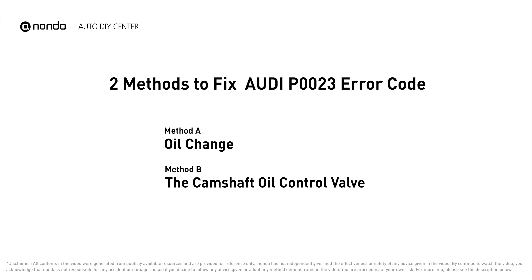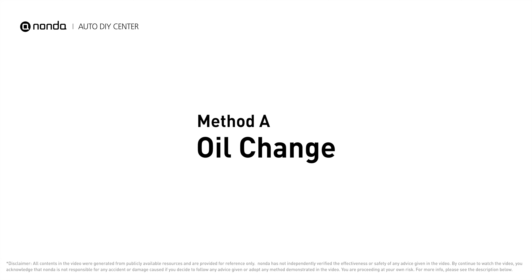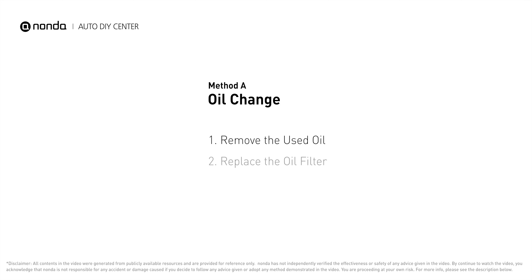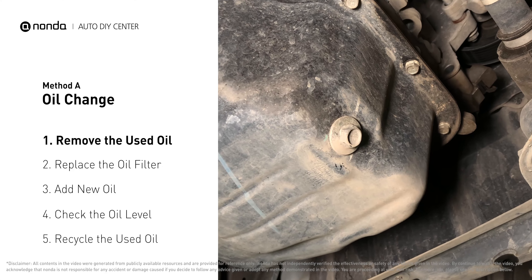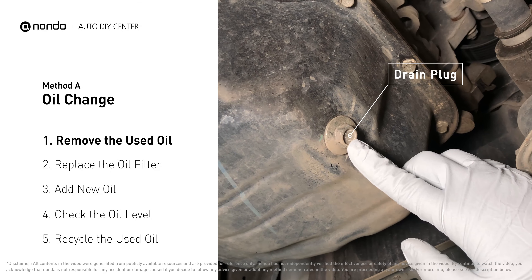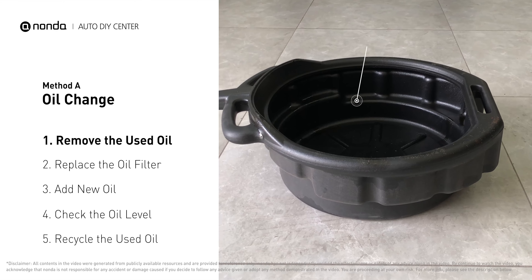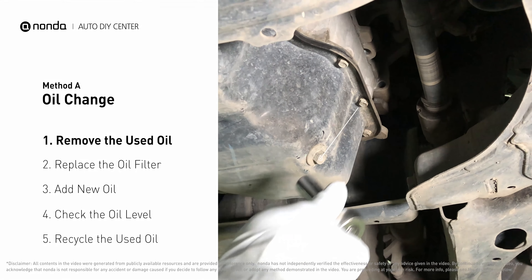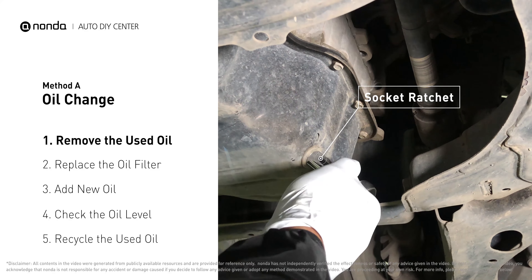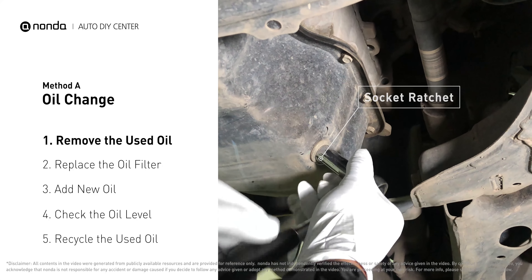Here are two of the most practical solutions to fix Audi's P0023 error code. Method A: oil change. Locate the oil drain plug on your vehicle and place an oil collection pan underneath it. Use a socket ratchet to remove the plug from the oil pan.